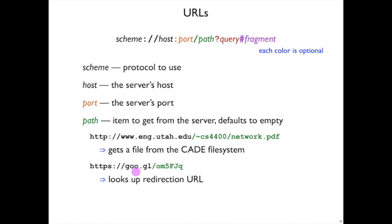As a different example, if you use the Google URL shortener and go to that address, the OM5FJQ is unlikely to be an actual file. It's a request to look in some database to find a URL and send back a redirection instruction to the browser.